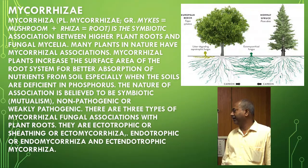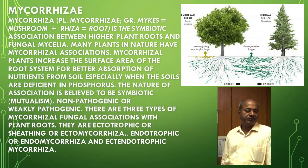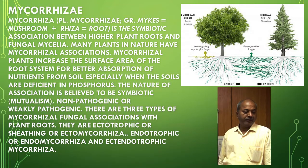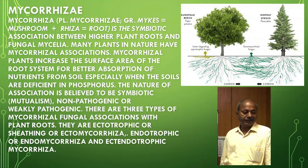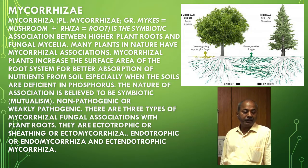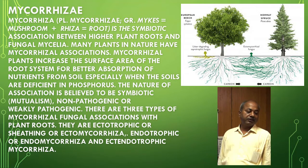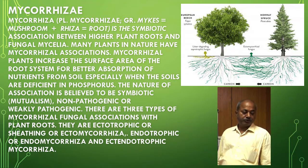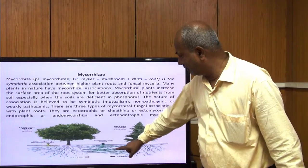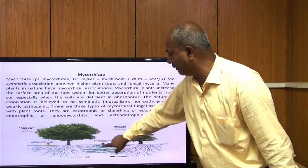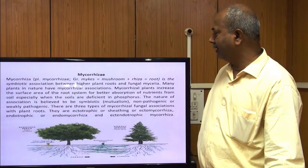Mycorrhizae is the symbiotic association of fungi with the roots of higher plants. Many plants in nature have mycorrhizal associations; mycorrhizal plants increase the surface area of the root system for better absorption of nutrients from soil, especially when soils are deficient in phosphorus. The nature of the association is believed to be symbiotic (mutualism), non-pathogenic or weakly pathogenic. There are three types: ectomycorrhizae, endomycorrhizae (endotrophic mycorrhizae), and ecto-endotrophic mycorrhizae.